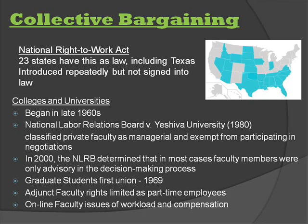Collective bargaining began in colleges and universities in the late 1960s. However, in 1980, with National Labor Relations Board v. Yeshiva University, private faculty were classified as managerial and exempt from participating in negotiations because faculty were involved in self-governance, tenure decisions, and other economic decisions. This caused existing faculty unions to dissolve.